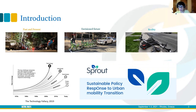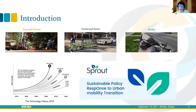But what is the reality? The reality is what we see in the image on the left. Why does this happen? As you can see in the image below, from the technology fallacy from 2019, technology is moving much faster than the definition of mobility policies. With the Sprout project, which is the framework of this study, we aim to bridge this gap.